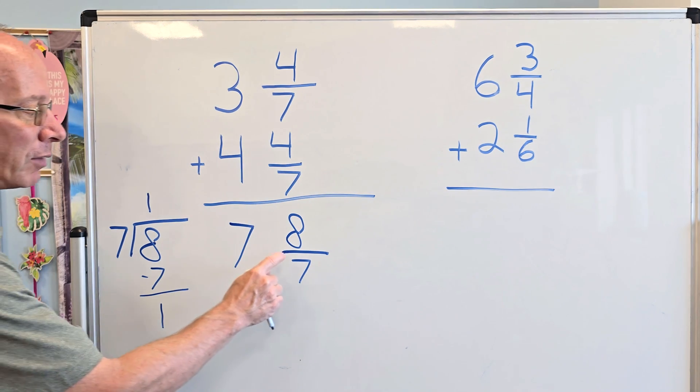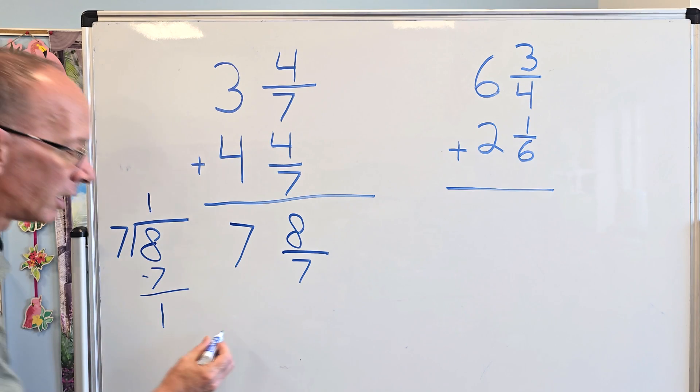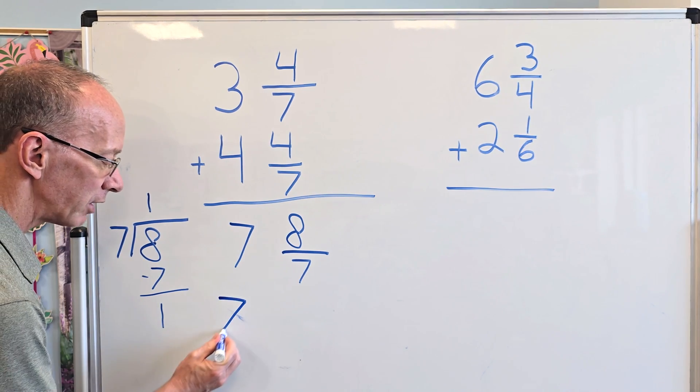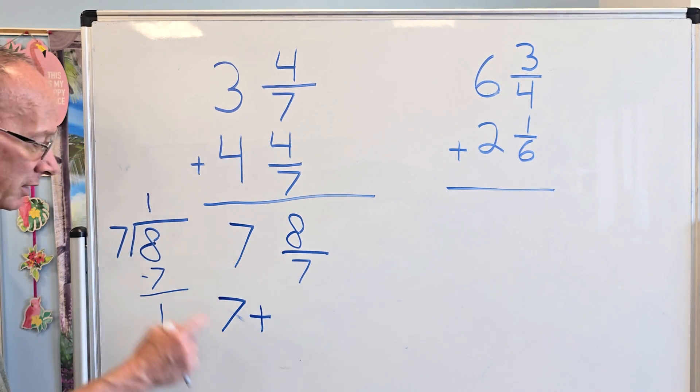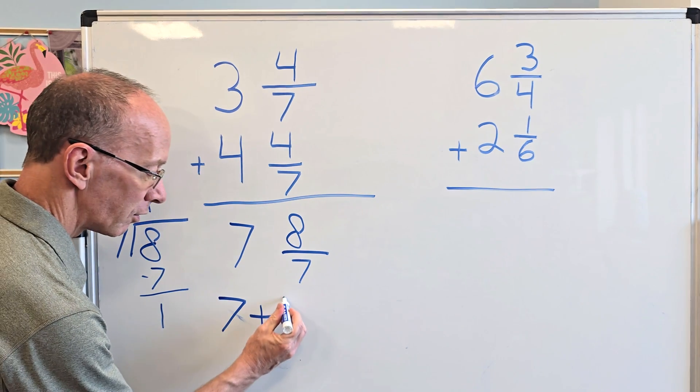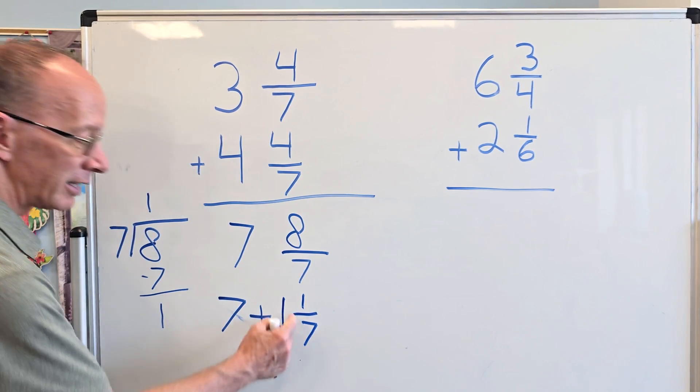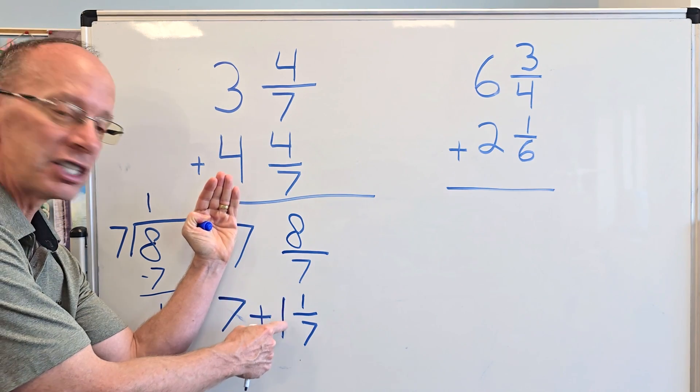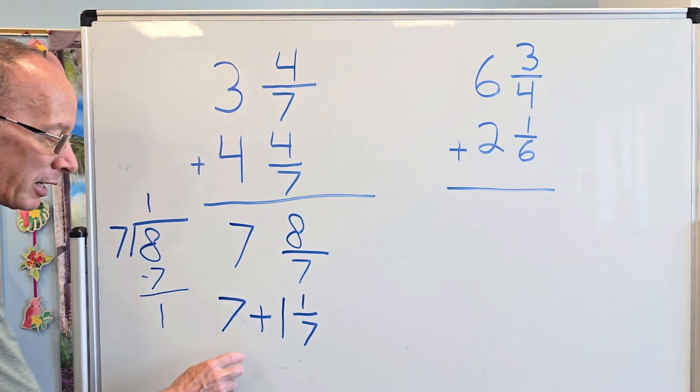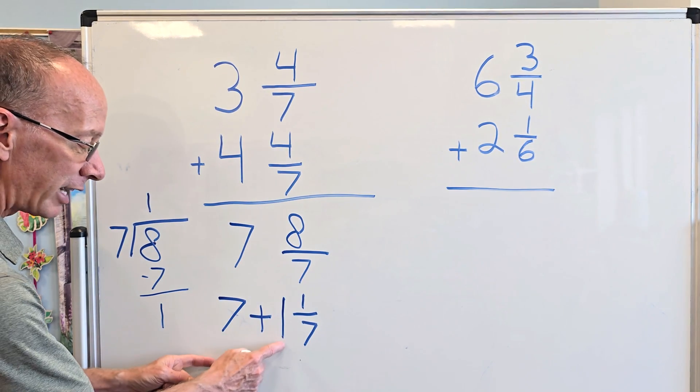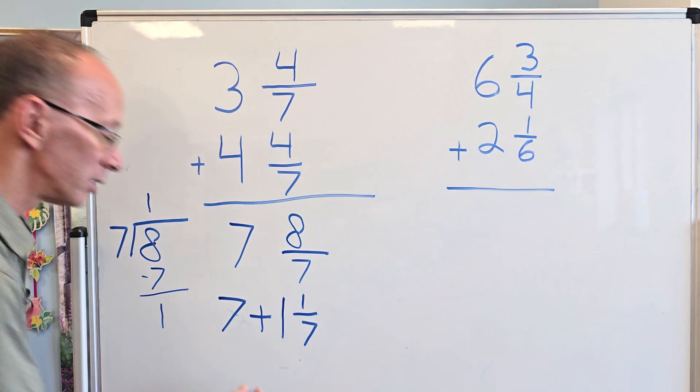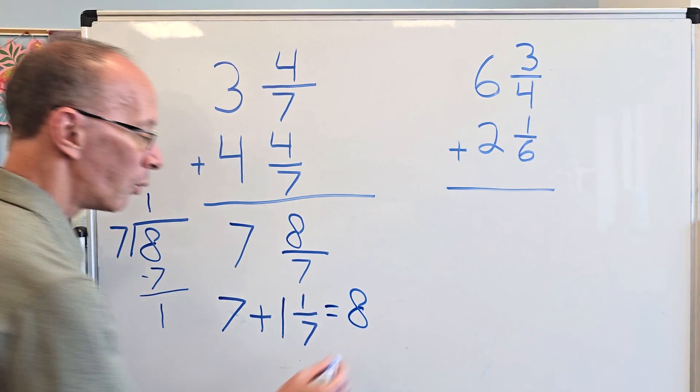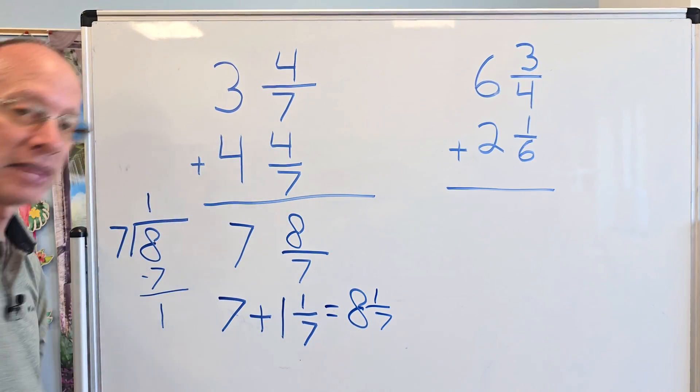So now I'm going to rewrite 8 sevenths as 1 and 1 seventh. So I'm going to take my 7 right here. The 7 didn't change. So I have 7 plus 1 and 1 seventh. This has the same value. I didn't change that, but this was an improper fraction. I just changed it over to a proper fraction. So now it's really easy. Add the whole numbers. So that would be 8, and then I put in my fraction, 1 seventh. There's the answer.